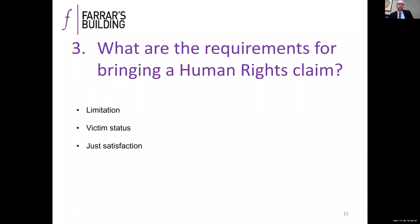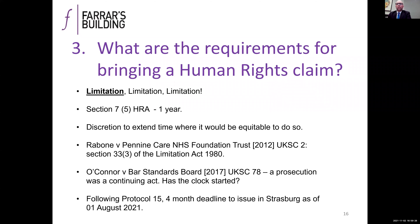Part three looks at the requirements for bringing a human rights claim: limitation, victim status, and just satisfaction. Just satisfaction, which relates to the award of remedies, isn't strictly a requirement for bringing the claim, but it is a requirement for getting a remedy.